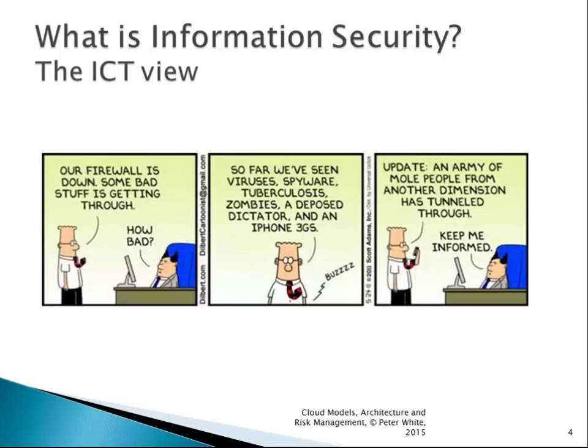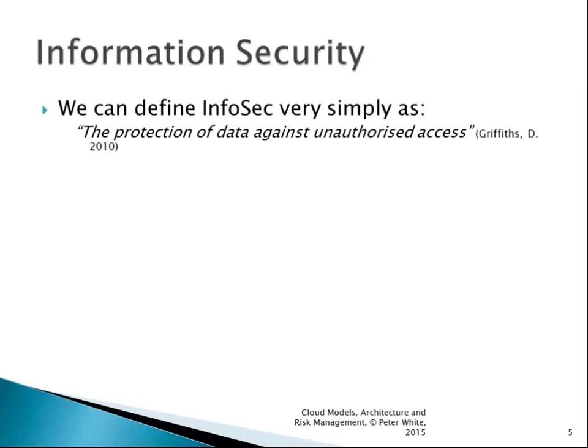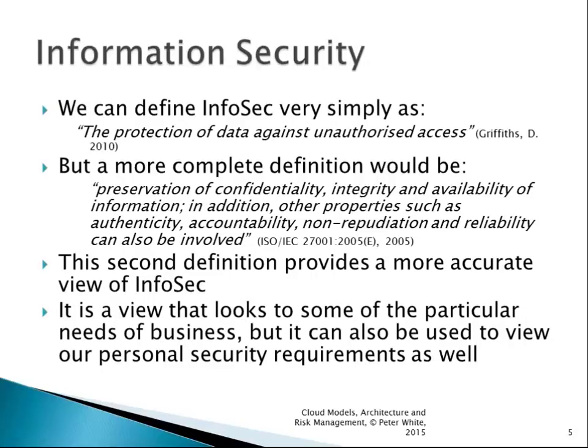We can define information security very simply as the protection of data against unauthorized access. A better definition would be the preservation of confidentiality, integrity, and the availability of information. In addition, such other properties as authenticity, accountability, non-repudiation, and reliability can also be involved. This comes from ISO 27001.